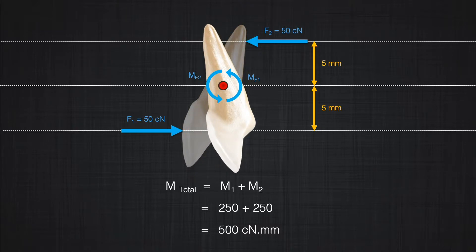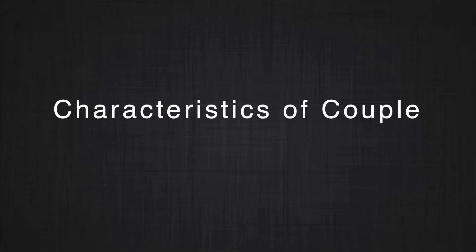A couple is two forces that are opposite to each other with parallel lines of action and equal magnitude. When applied to a tooth, it would not cause any displacement — it would not move the center of resistance from one place to another. It just produces a large moment, and the moment, as we discussed, can produce rotation. Let's look at some of the characteristics of the couple.